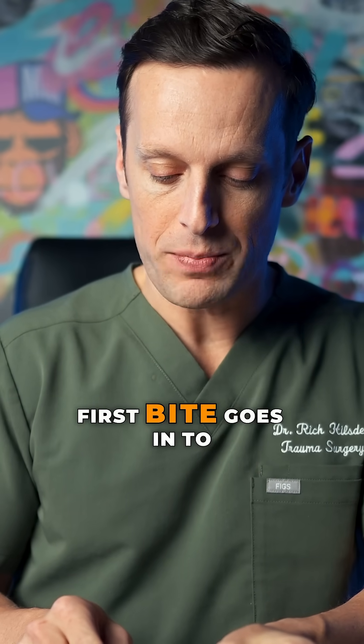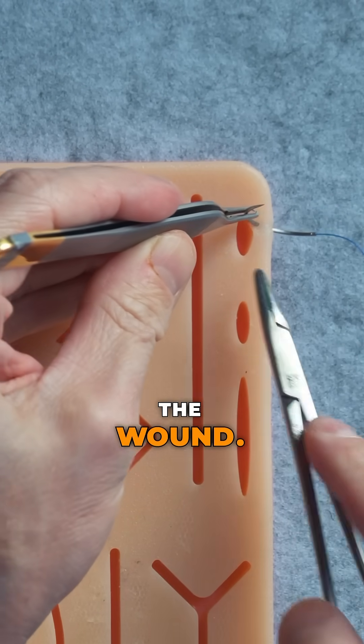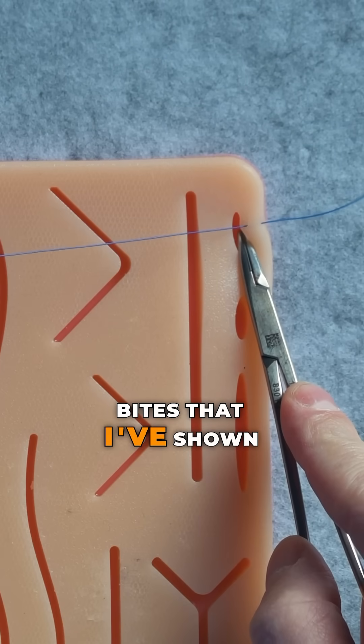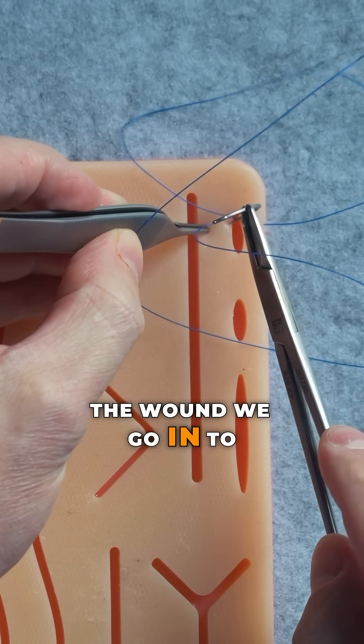We're going to demonstrate the first bite goes in to out but does not cross the wound, unlike all the other bites that I've shown on this channel. The next bite goes across the wound. We go in to out.